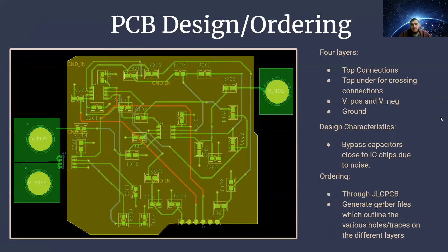For our PCB design, the top layer was used for most of our connections. There was a dedicated layer for V positive and V negative, as well as a dedicated layer for ground, and then our last layer was used in case we had to cross traces anywhere. The bypass capacitor is placed as close to the ICs as possible.